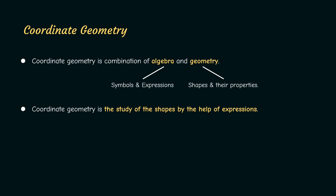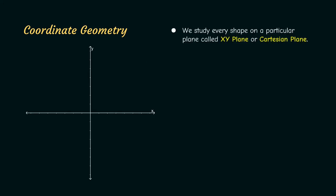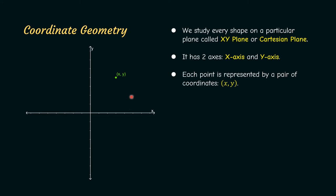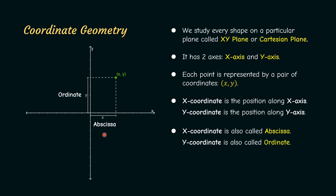But how can we study shapes by the help of expressions? In coordinate geometry, whatever shape we are studying, we study it on a particular plane called the x-y plane or the Cartesian plane. In this plane, there are two axes — the x-axis and the y-axis. Every point on the plane is represented by a pair of coordinates (x, y). The x-coordinate represents the position of the point along the x-axis, and the y-coordinate represents the position along the y-axis. The x-coordinate may also be known as abscissa and the y-coordinate as the ordinate.